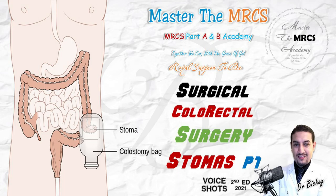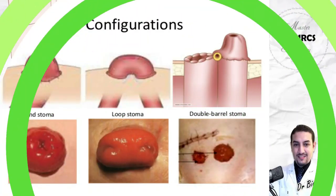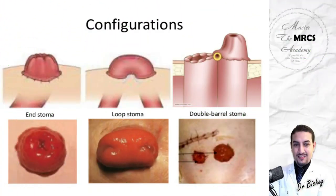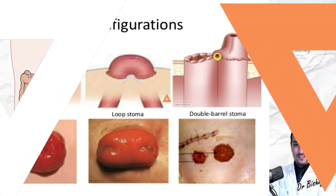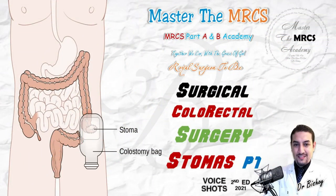According to function and construction, a stoma can be categorized as end, loop, double-barreled/parallel, or Bishop-Koop type — which is a distal ileostomy with side-to-side ileal anastomosis or proximal ileostomy with two-sided anastomosis. The indications for stoma include feeding — such as percutaneous endoscopic gastrostomy — or lavage as in appendicostomy.